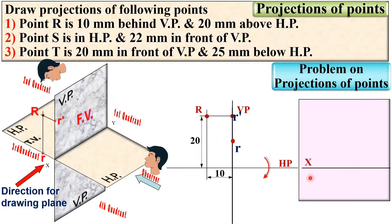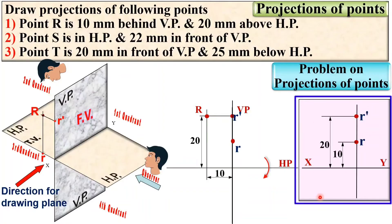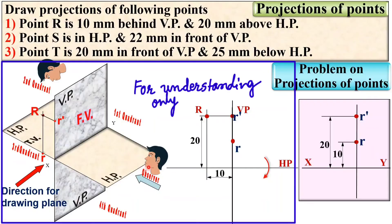Now you can draw it very simply. First, draw the XY line. Then draw the vertical reference line for R dash and R. R dash is 20 mm above the XY line, so take 20 mm from the XY line to get R dash, and mention the dimension. Here it is 10 mm behind VP, and since HP is rotated clockwise, this distance is also 10 mm below the XY line — so take 10 mm to locate point R and mark it 10 mm. This is the projection of point R that you need to draw in the examination. The 3D portion is only for understanding.